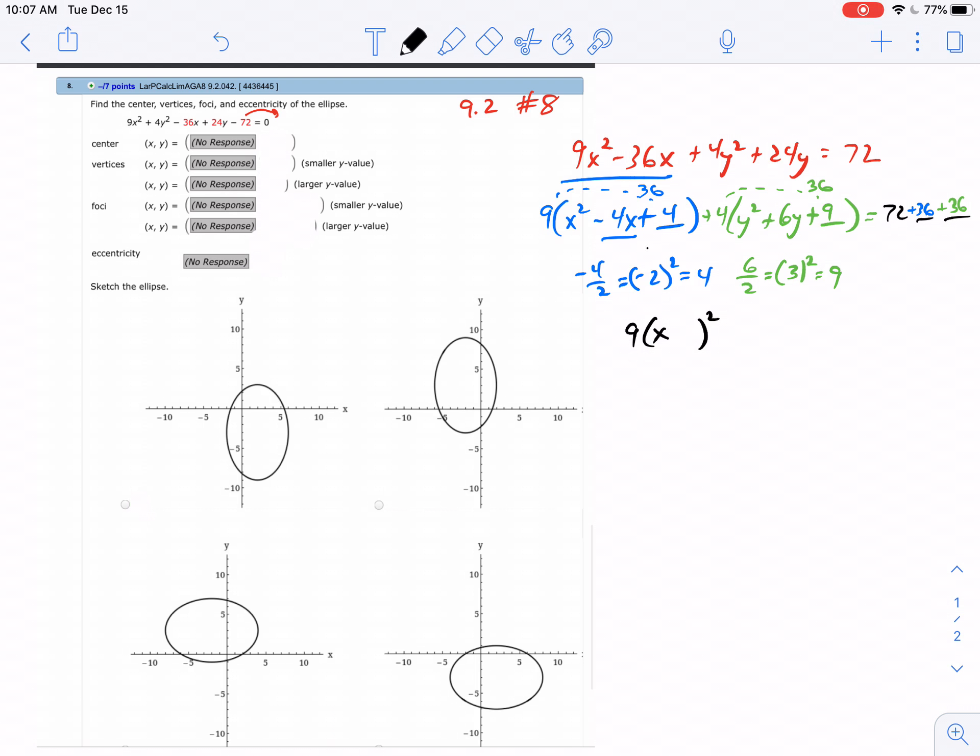Now I have 9 times (x is my variable in the first parentheses and this negative 2 is going to be used for that) plus 4 times (y and I have a positive 3 right there). And 36 plus 36 is 72, and 72 plus 72 is 144.